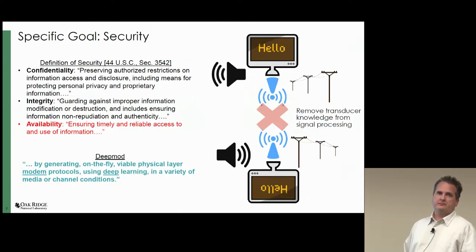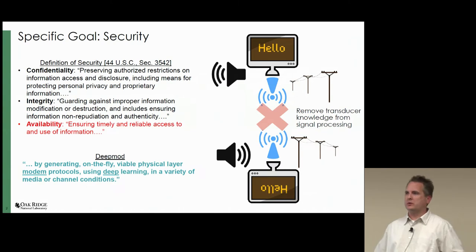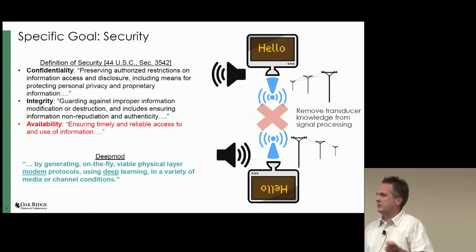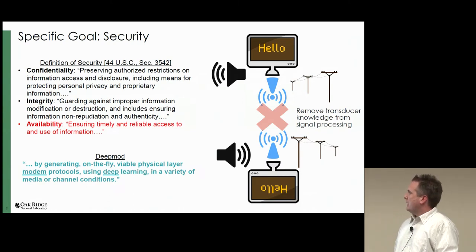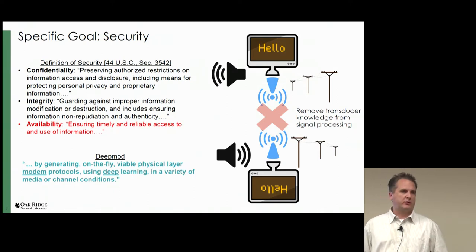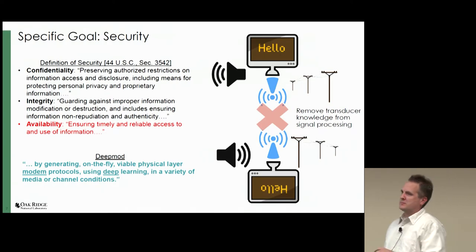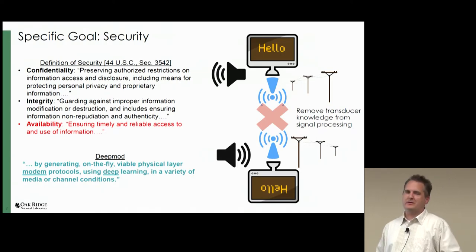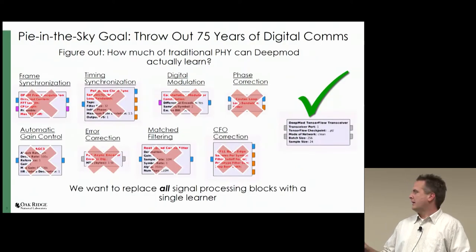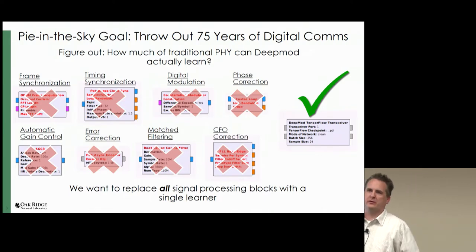One thing I found is that the secret to research is to do what you love and then try to get somebody else to pay for it. But a lot of times what the sponsors want doesn't overlap with what you want to do, so you kind of have to fudge things a little bit. This slide is what my sponsors want me to do, and the rest of the slides are what I want to do. I just don't want this presentation getting back to them — they'd be like, what are we paying you for?